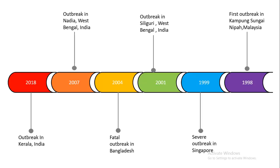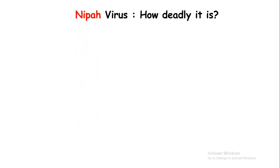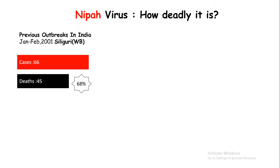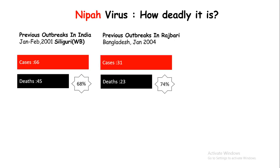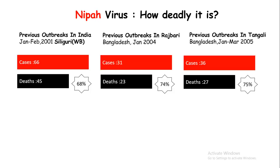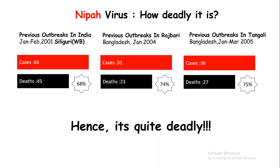So how deadly is Nipah virus? Statistical data shows that in the 2001 outbreak, out of 66 cases, 45 were dead — a fatality rate of 68%. From the 2004 and 2005 outbreaks in Bangladesh, the fatality rate was almost 74 to 75%. That means Nipah virus is quite deadly and the mortality rate is pretty high.